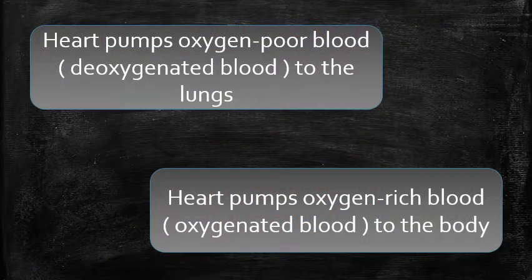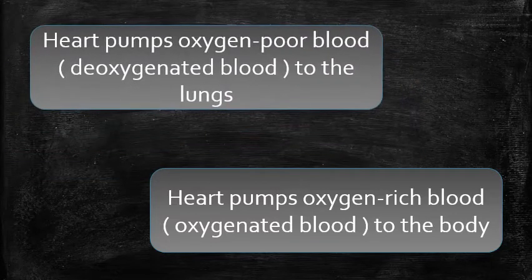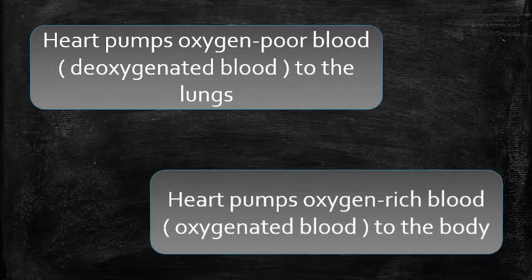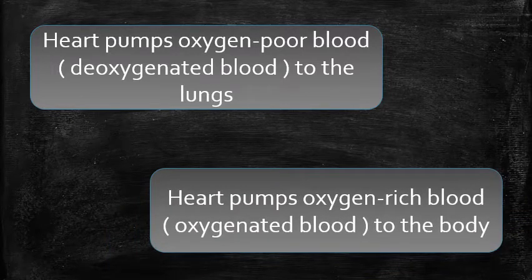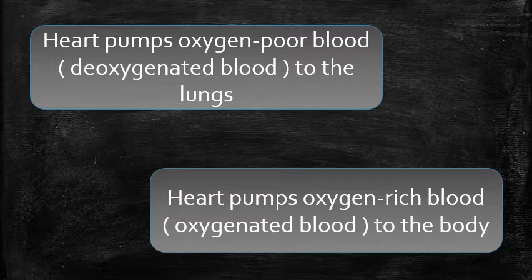Before discussing the structure of the heart, you have to know about two terms: oxygen-poor blood and oxygen-rich blood. The heart pumps oxygen-poor blood, also known as deoxygenated blood, to the lungs. The heart also pumps oxygen-rich blood, also known as oxygenated blood, to the body. So your heart as a pumping organ takes deoxygenated blood to the lungs and oxygenated blood to the entire body.